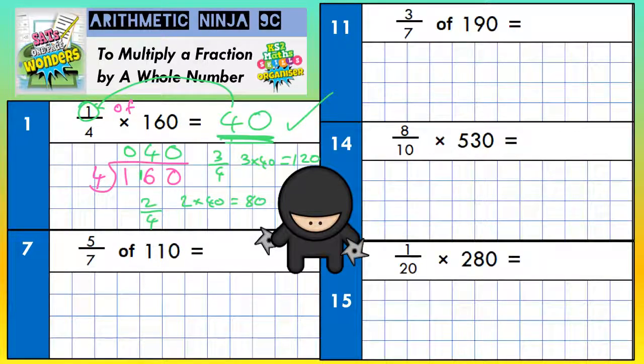On question 7, we're going to look at a slightly different method for doing this. And you could make the whole number into a fraction by putting the invisible 1 underneath. Once you've done that, you can swap the of for times and go top times top, bottom times bottom. So 5 lots of 110, so 110 times 5, what's that going to give us?